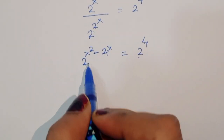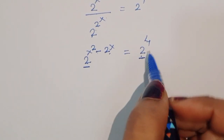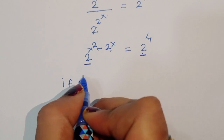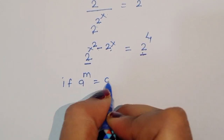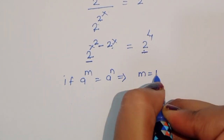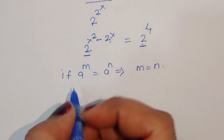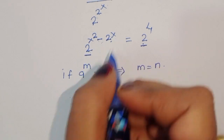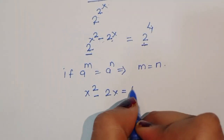Now we are comparing both sides — the base is the same. We know the formula: if a power m is equal to a power n, then m is equal to n. Since the bases are the same, we can compare the powers. So we can write x squared minus 2x is equal to 4.